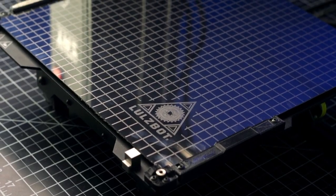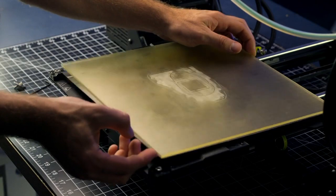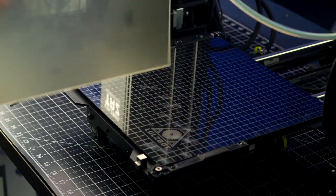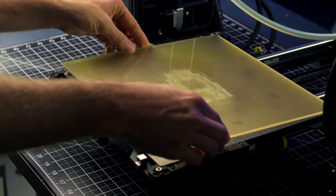The modular print bed system is also a standard feature, allowing you to quickly swap between different build plates to increase uptime, and give you the flexibility of printing on the PEI build surface for some materials and glass for others.